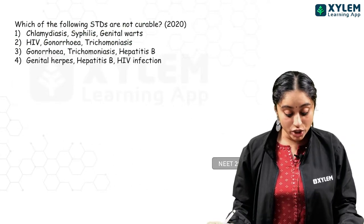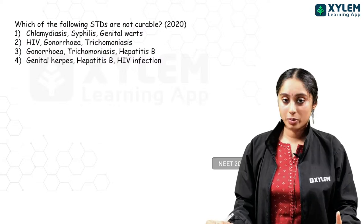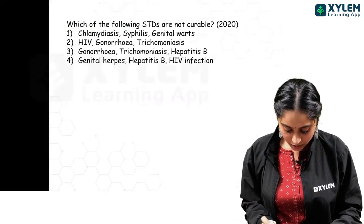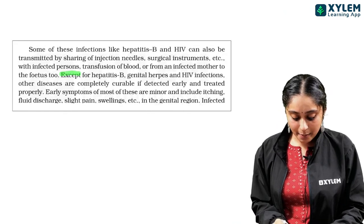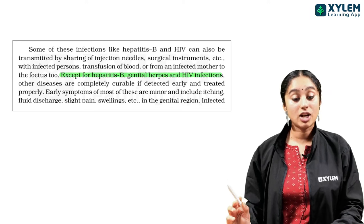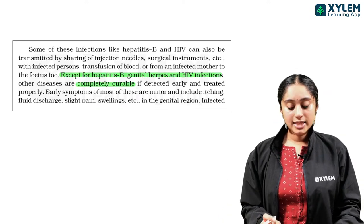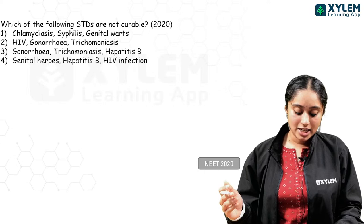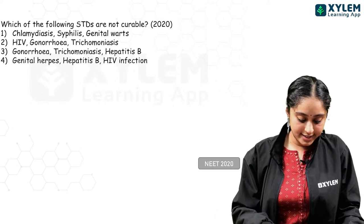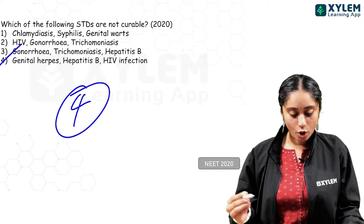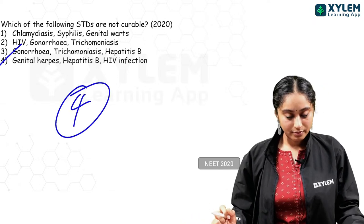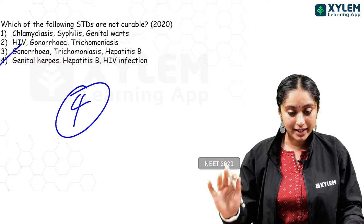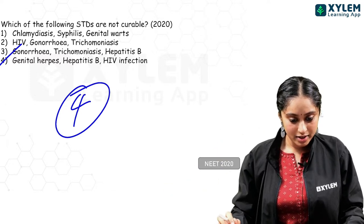NEET 2020: which STDs are not curable? NCERT states that except for hepatitis B, genital herpes, and HIV infections, everything else is curable. So option 4 — hepatitis B, genital herpes, and HIV infection — are the ones not curable. Very direct — if you've read NCERT, you can answer immediately.